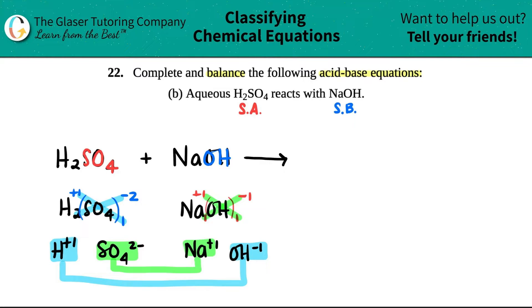Doesn't matter which one you write first. I'll just write the H plus one first. So H plus one is now going to be reacting with OH minus one. Take those charges and crisscross them down now. So this one tells me that I have one hydroxide. This one tells me that I have one H. So my compound would be HOH, but HOH is basically H2O. So that's one of my compounds.